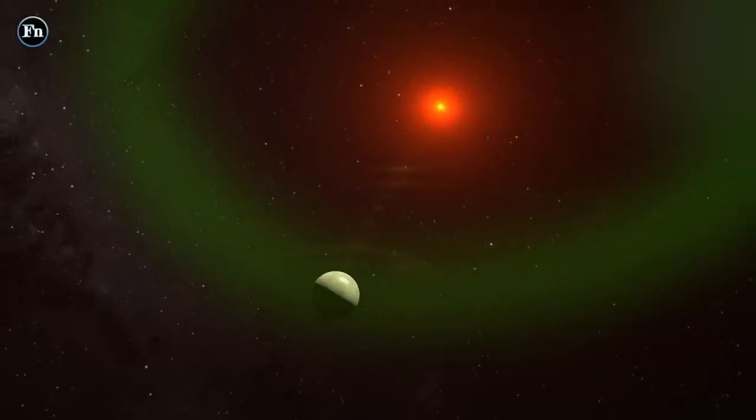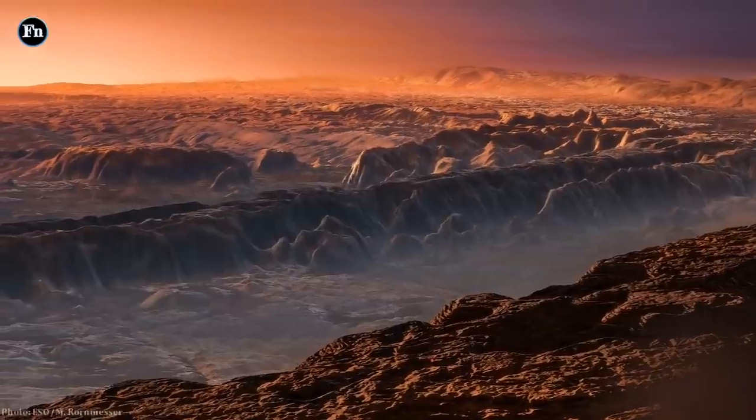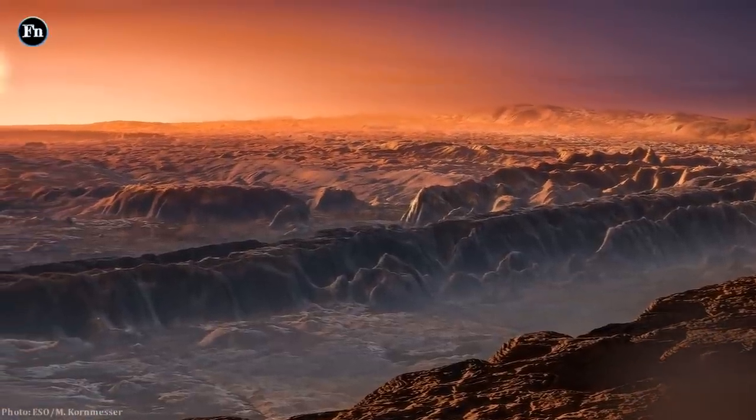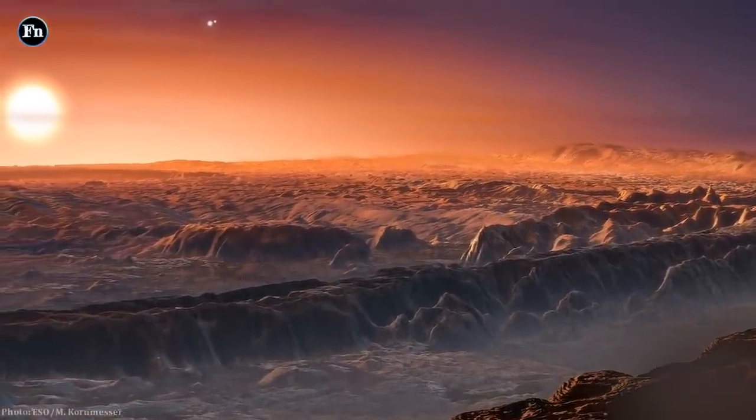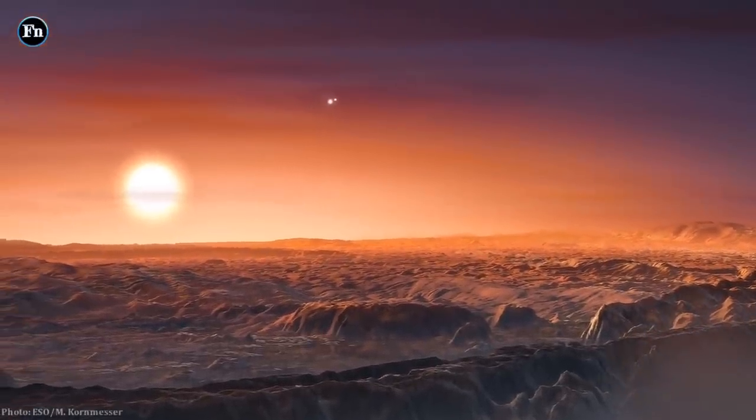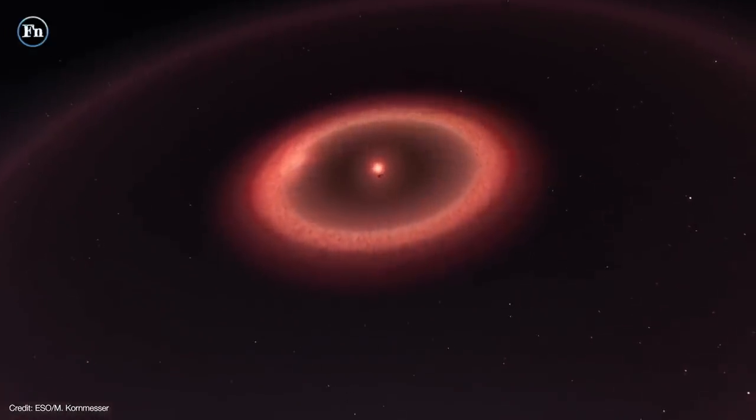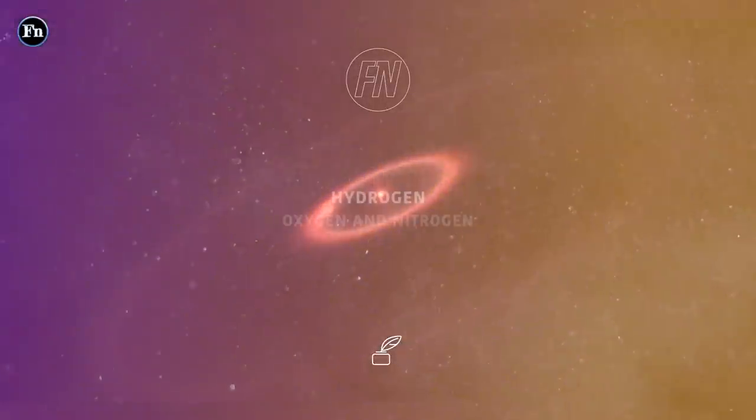The grand discovery was announced in 2016. Proxima b encounters bouts of severe ultraviolet radiation, hundreds of times greater than Earth does from the sun. In the habitable zone of its star, that radiation produces enough energy to strip away the lightest molecules, hydrogen, and over time heavier elements such as oxygen and nitrogen.